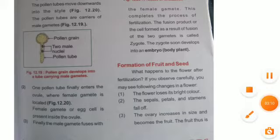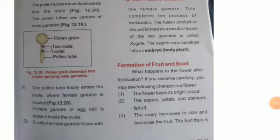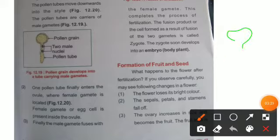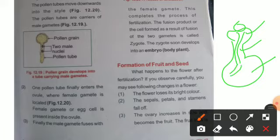The female gamete — which you can also call the egg cell — is present inside the ovule. To remind you, we had seen a flask-shaped structure: the stigma at the top, then the style, and then the ovary. When pollen grains land on the stigma, a pollen tube forms and later enters the ovary.